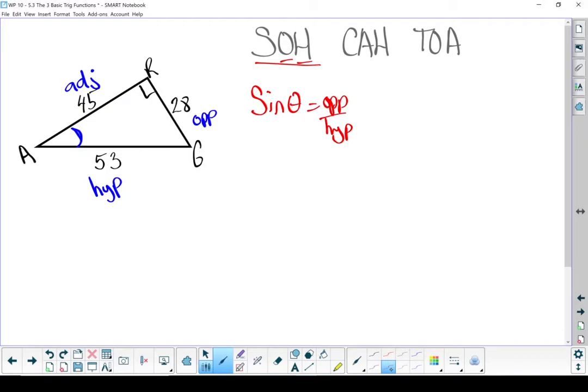Okay, I'm still working from angle A. So sine of A equals opposite, which is 28, over the hypotenuse, which is 53. Dividing out that fraction, sine of A equals 0.528.